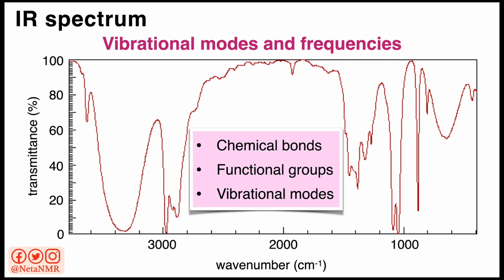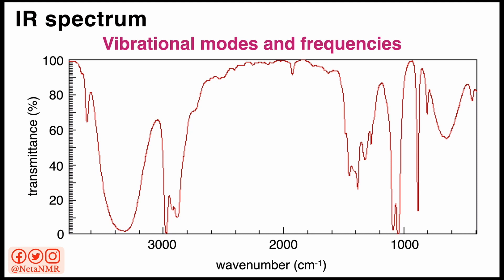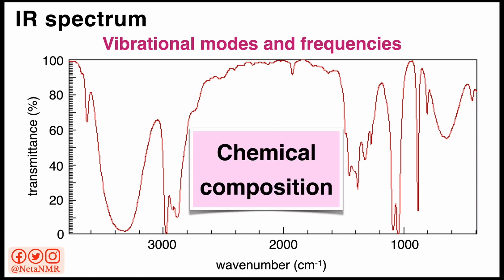This can help us identify the chemical bonds, the functional groups, and the vibrational modes in the sample that we're measuring. Additionally, if we compare our spectrum to the IR spectra from large databases of IR spectra for reference compounds, we can identify the chemical composition of the sample we're investigating.